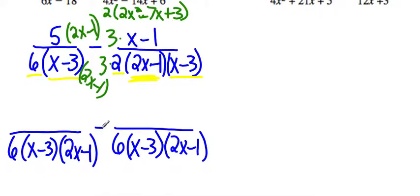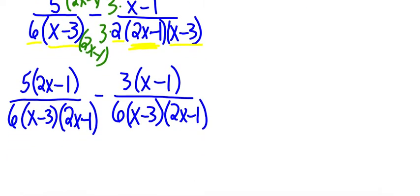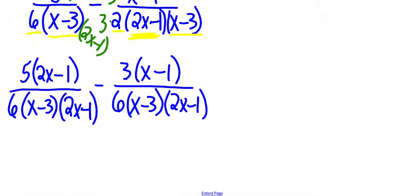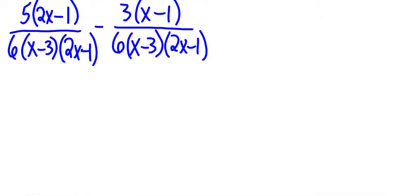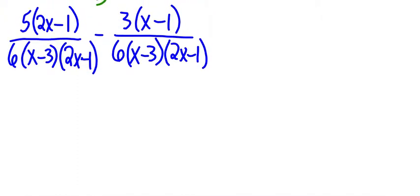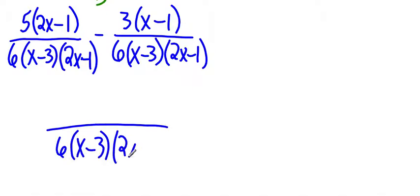I'll rewrite it and show all kinds of work here. So this fraction is now 5 times 2x minus 1, and this one is 3 times x minus 1. Okay, now that we've got common denominators, we want to combine these into a single fraction.